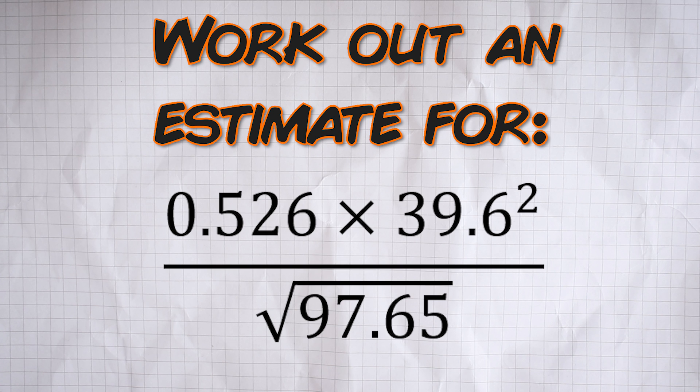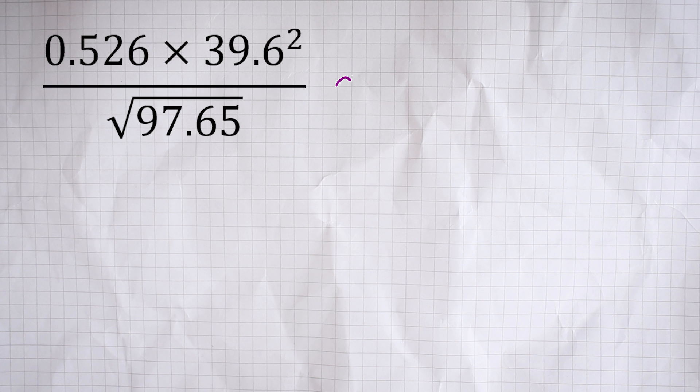Well, what the examiners want you to do in this situation is just to round each number off in the question to one significant figure. In other words, just round off that first digit—well, the first digit that isn't a zero—and then replace the rest with zeros. So that first number, 0.526, we're going to round that off to 0.5.